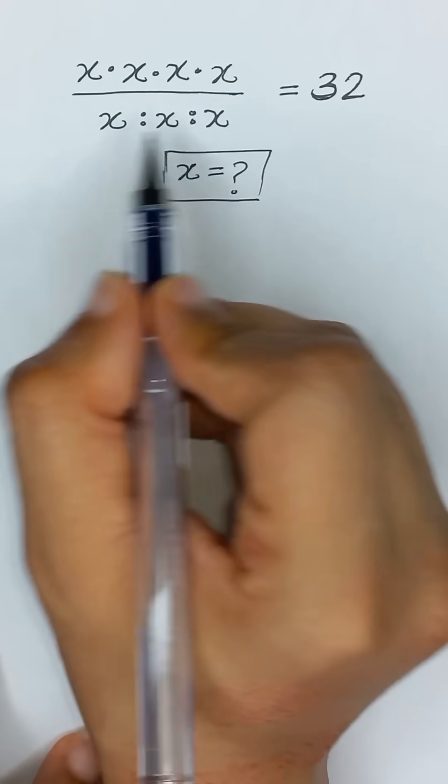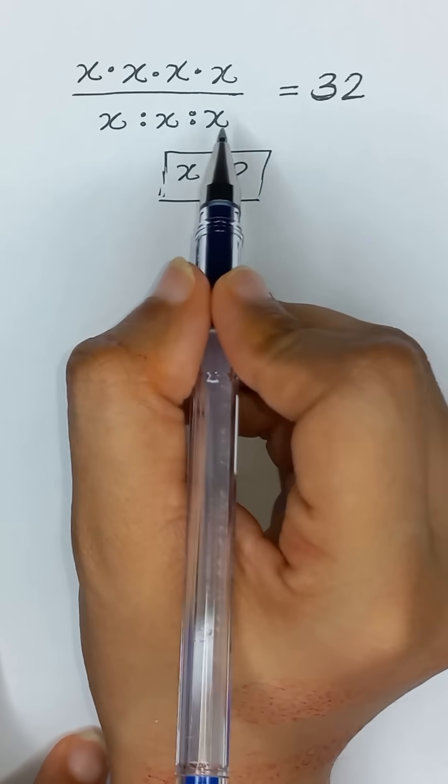x times x times x times x, divided by x ratio x ratio x, equals 32.